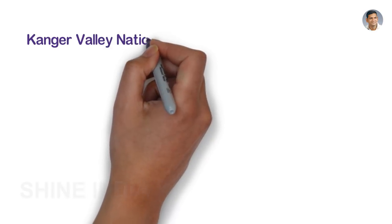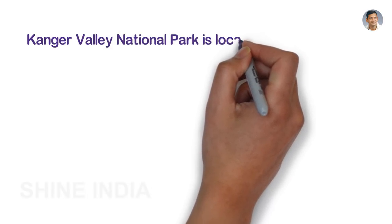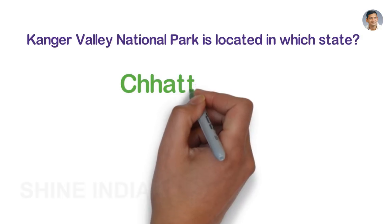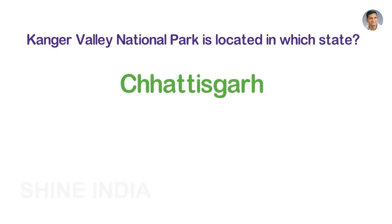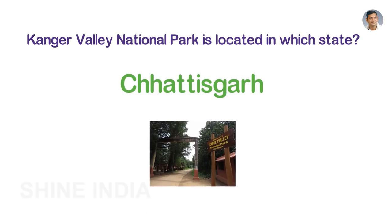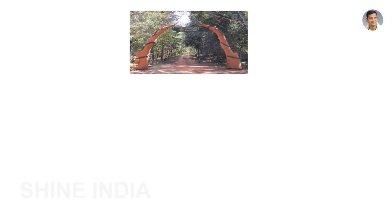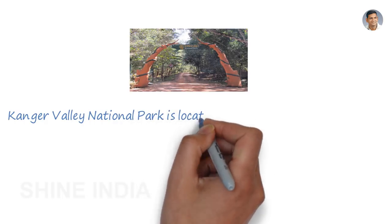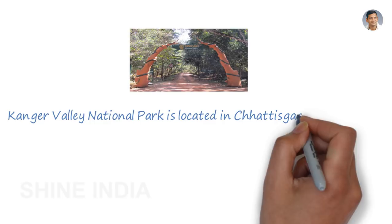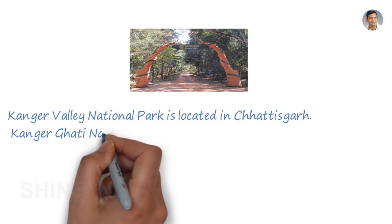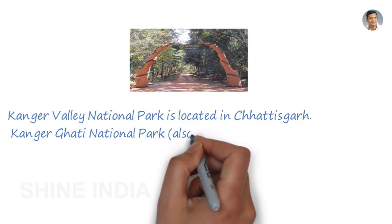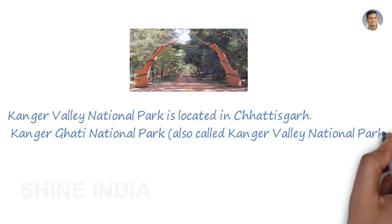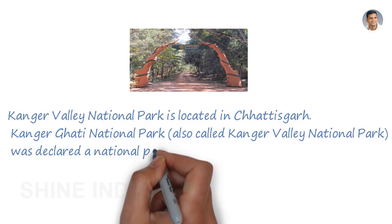Kangar Valley National Park is located in Chhattisgarh. Also called Kangar Ghedhi National Park, it was declared a national park in 1982 by the Government of India.